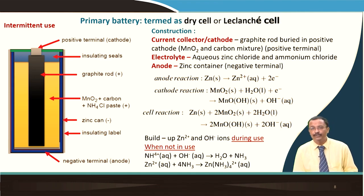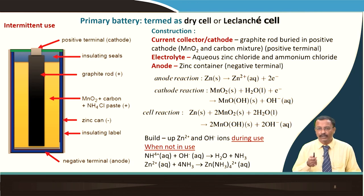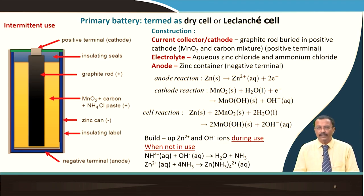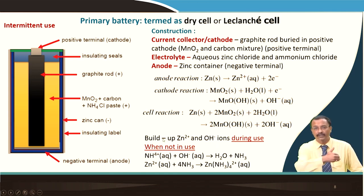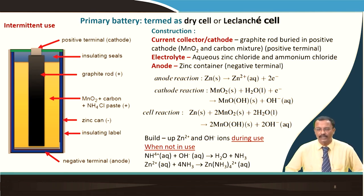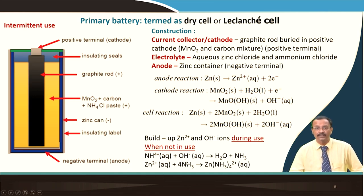There is one problem with this kind of battery that you may have experienced: if you turn on a torchlight for a long period of time, the intensity of the light progressively reduces and finally the battery stops working. When you use it continuously, zinc ions accumulate at the zinc anode part and hydroxyl ions accumulate in the manganese oxide part. Due to this charge accumulation, the reaction rate reduces and electron flow diminishes.